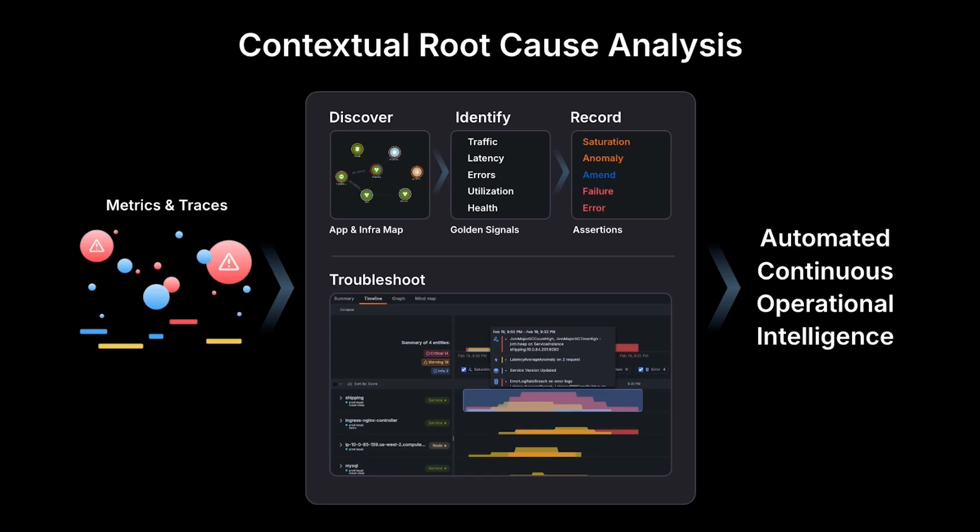Grafana Cloud has a unique solution to these problems. In Grafana Cloud, you can actually have contextual root cause analysis done for you. This is done by ingesting all your metrics and traces into Grafana Cloud, where we will discover the entities and how they're connected, identify the golden signals, and record assertions based on the data. You will then be presented with a troubleshooting workbench that is a single pane of glass across all the different telemetry signals. This is all done automatically — it continually happens as you send the data, and it only gets smarter as you continue to use the platform.